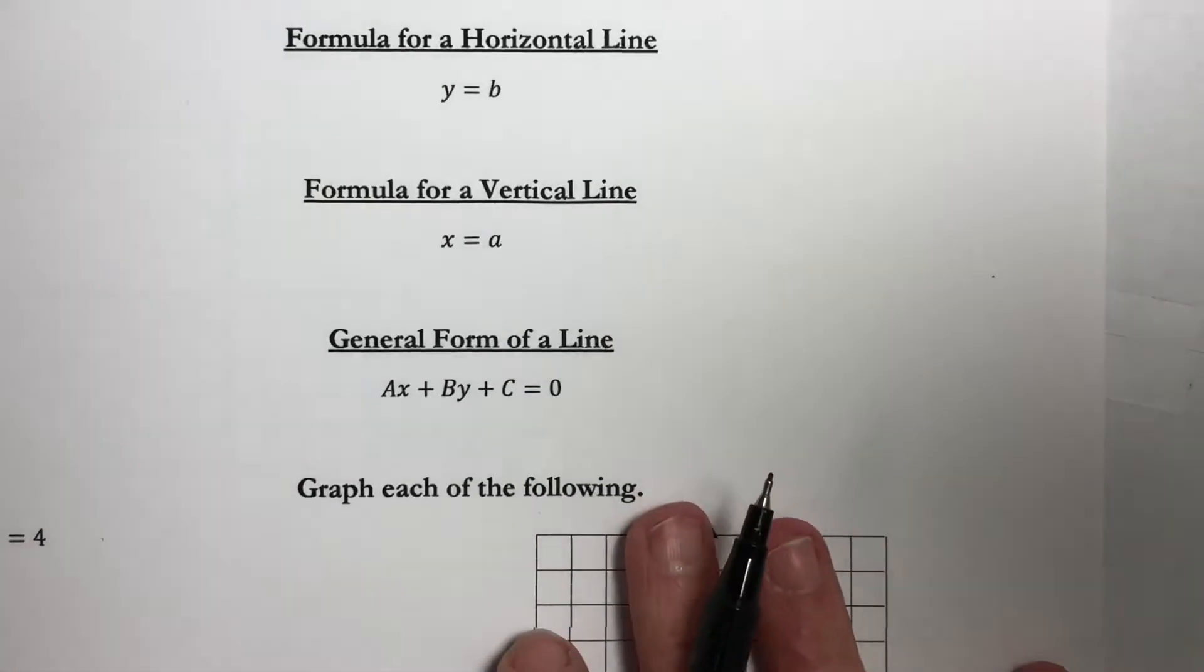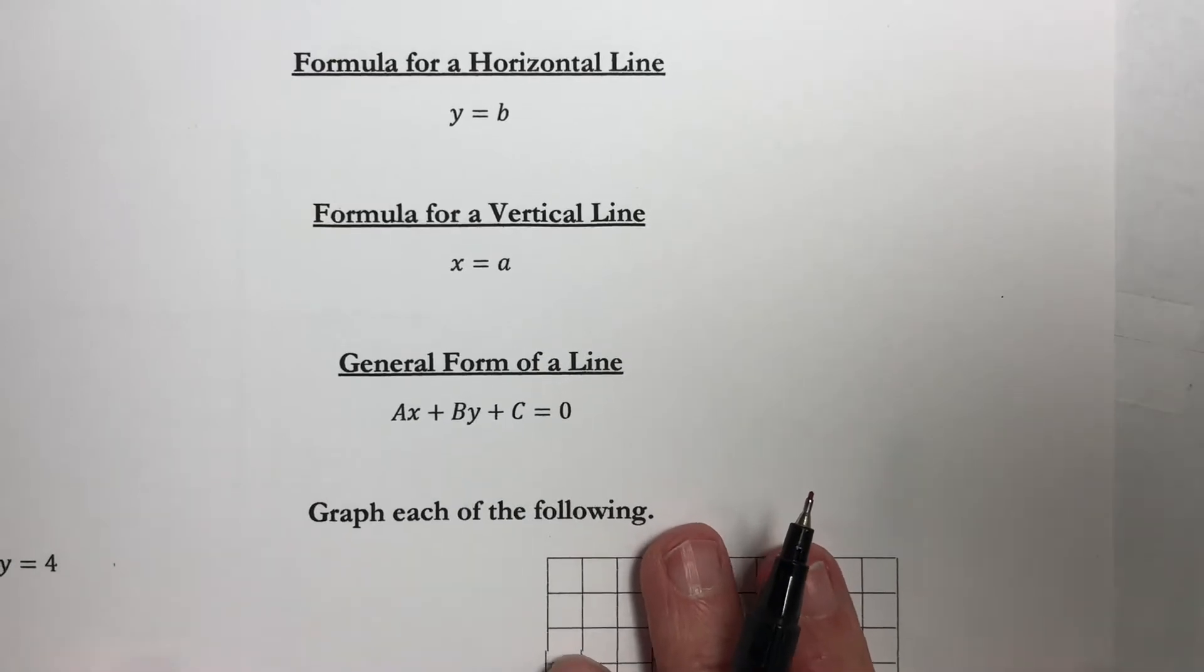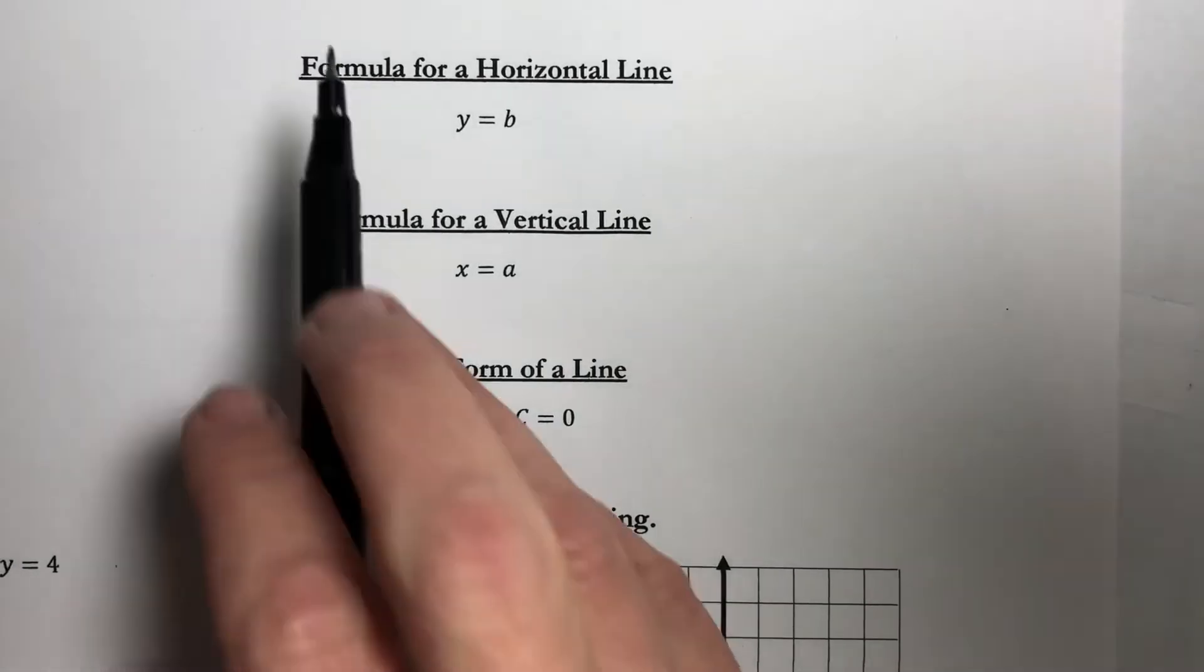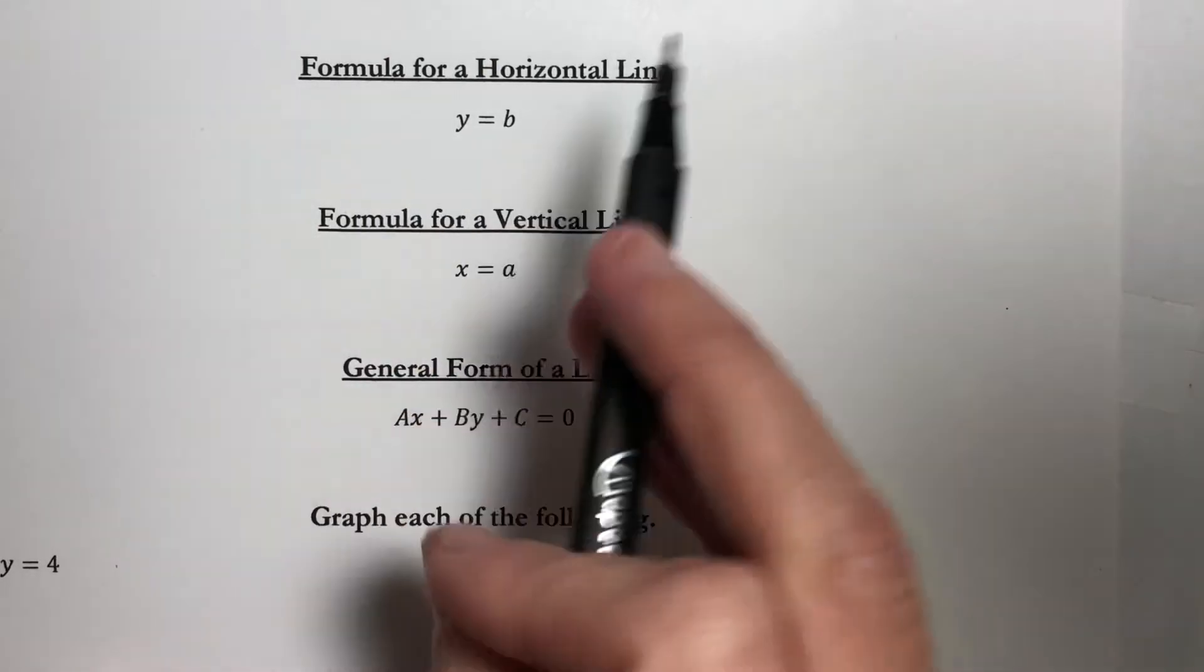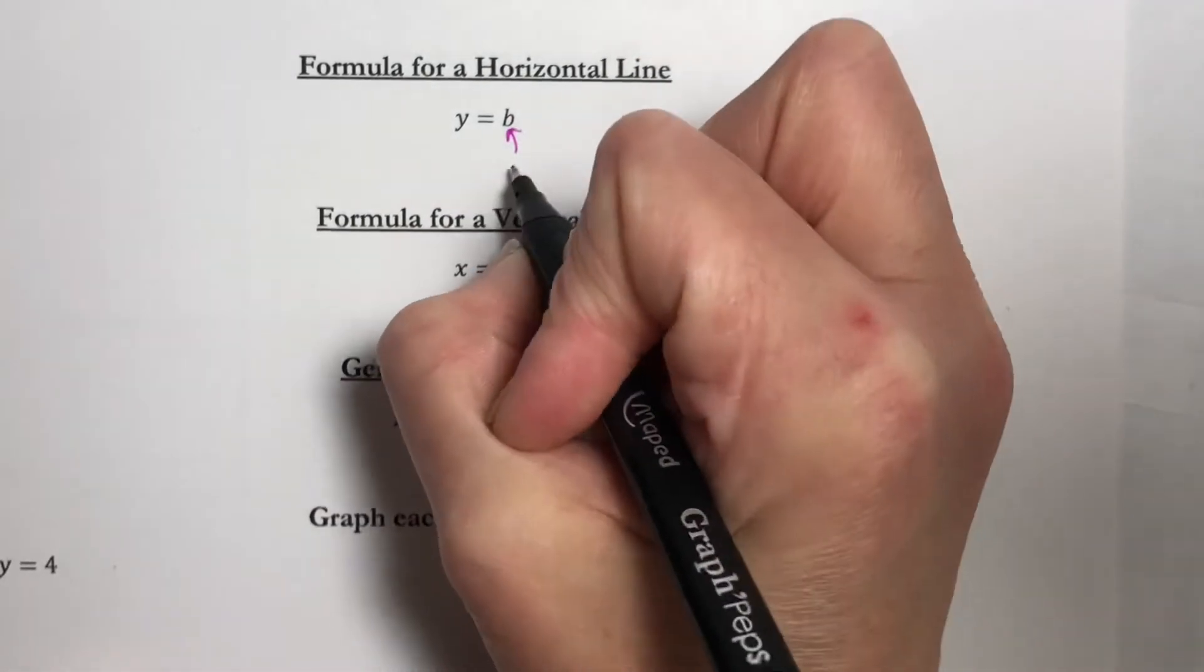Okay, so we have some special cases. The formula for a horizontal line is y equals b. b is still your y-intercept.